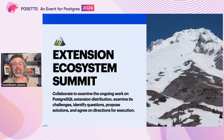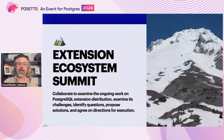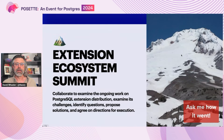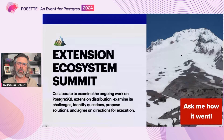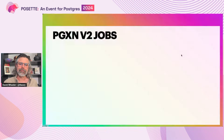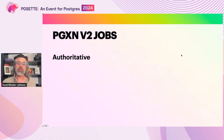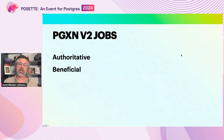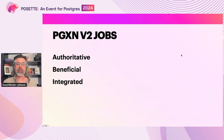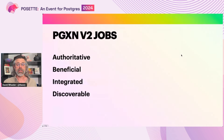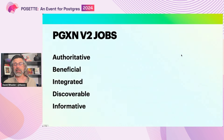One of the key points of community engagement has been the extension ecosystem summit. We had six virtual mini-summits to share ideas, discover patterns, and discuss issues, as well as an in-person summit at pgconf.dev on May 28th. We've also worked to identify the key jobs to be done for the PGXN extension ecosystem. It must be authoritative — the official canonical source of record for all Postgres extensions. It has to be beneficial, meaning extension authors will benefit from developing and publishing there. It needs to be integrated so it's easier for developers to start writing and publishing extensions. And it has to be discoverable — making extensions easy to find and understand — and informative, making extension documentation consistent, standardized, and comprehensive.